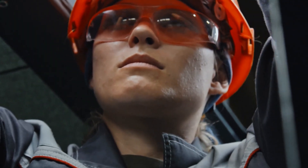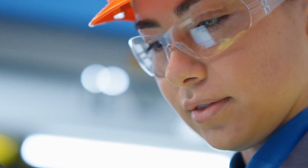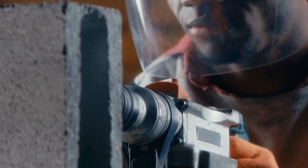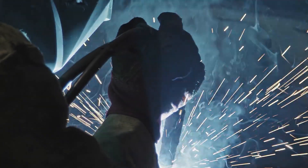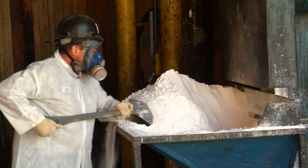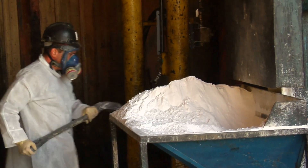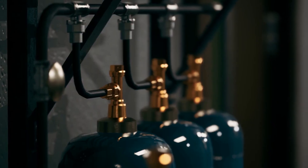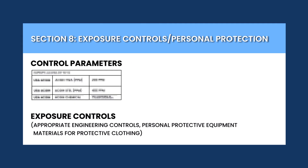Common PPE includes eye and face protection such as safety glasses, goggles, or a face shield, protective gloves, and protective clothing. In your workplace, you may also be required to use a respirator if you are exposed to certain concentrations of carcinogens, asbestos, ethylene oxide, and lead. A chemical's SDS Section 8 provides detailed information on the personal protection requirements that must be followed. Often, Section 8 will specify protective gloves, protective clothing, and eye protection.